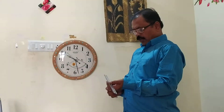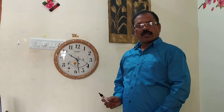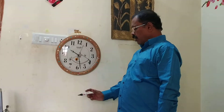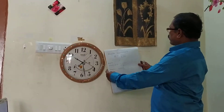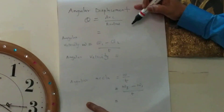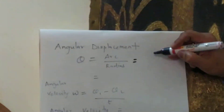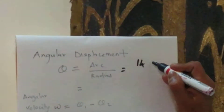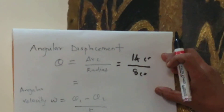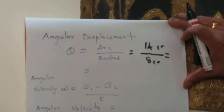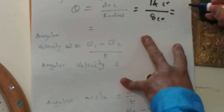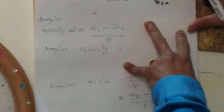Then we can do the calculation. The change in angular displacement with respect to time is called angular velocity. Accordingly, we substitute the values. The angle theta equals arc by radius. Let me write this: angular displacement theta equals arc by radius. The value of the arc is 14 centimeters and the radius is 8 centimeters. So the angular displacement will be — you can find the value. By simplifying that equation, you will get the value for this angular displacement.